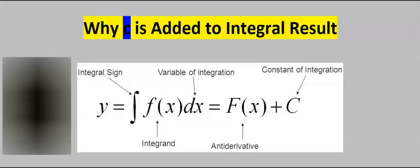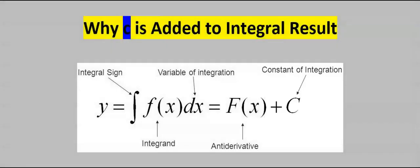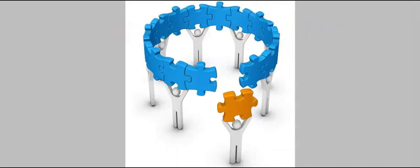Why C is added to integral result? Only one C must be added at the end of an integral result. The C simply means constant. This is the missing link discarded in differentiation.